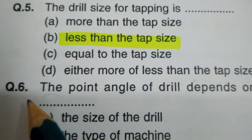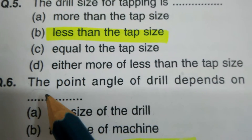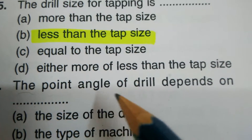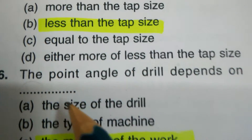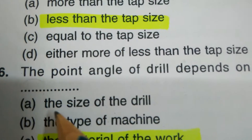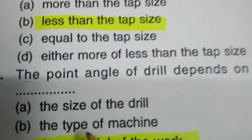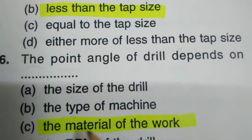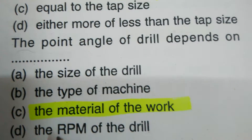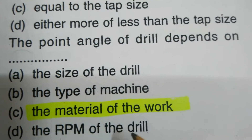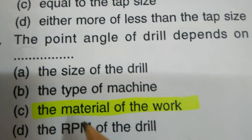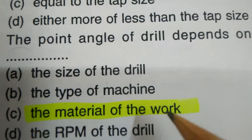Question number six. The point angle of a drill depends on dash dash. Options: size of the drill, the type of the machine, the material of the work, the RPM of the drill. The correct answer is: the material of the work.